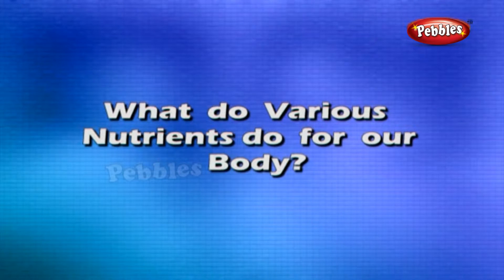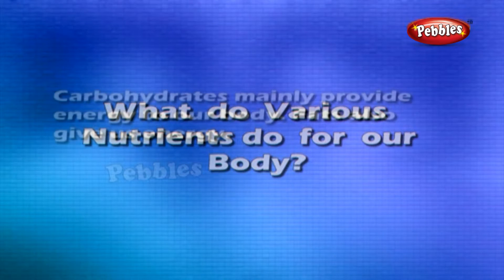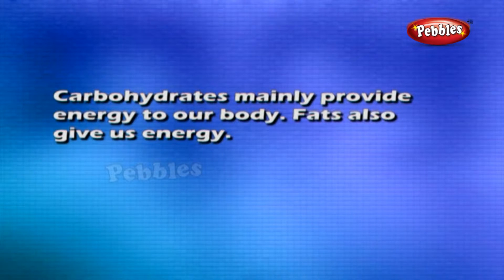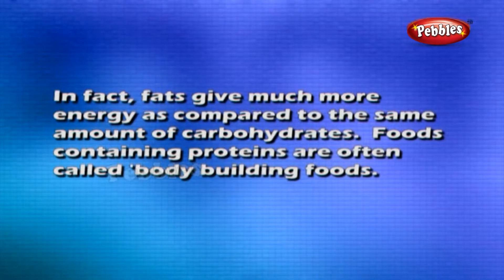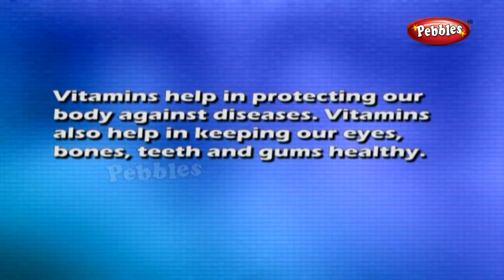What do various nutrients do for our body? Carbohydrates mainly provide energy to our body. Fats also give us energy — in fact, fats give much more energy compared to the same amount of carbohydrates. Foods containing proteins are often called body-building foods. Vitamins help in protecting our body against diseases and help in keeping our eyes, bones, teeth, and gums healthy.